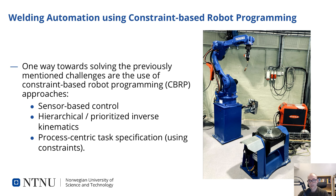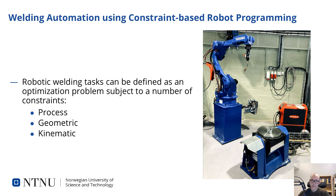The task, such as robotic assembly or robotic welding, is defined or specified in terms of constraints on the process — geometric constraints on the process, geometric constraints on the workpieces and the environment, as well as kinematic and dynamic constraints on the robotic system. In terms of robotic welding, we will focus on three sets of constraints that can be used to define the welding task: constraints on the welding process, geometric constraints on the welding tool and the workpiece, as well as kinematic constraints on the robotic system.